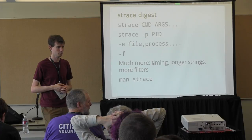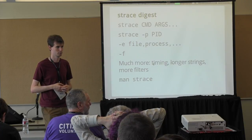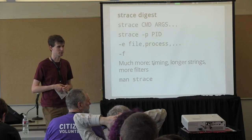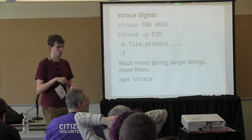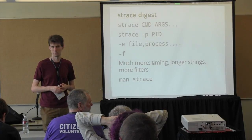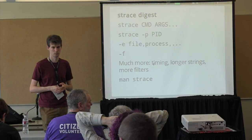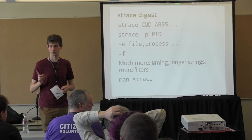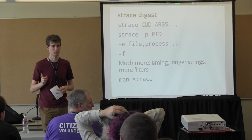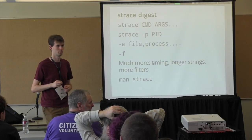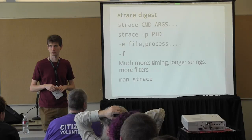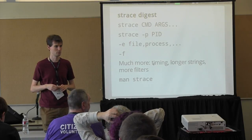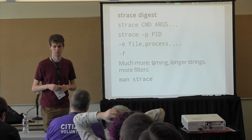If you're on a system like OS X and you'd like to have strace, the equivalent with dtrace is called dtruss — that's like strace but implemented with dtrace. There's also dtr and dss. Those are the two great outside tools — well, tshark is great too, I just didn't describe it in detail. Now we'll go inside.